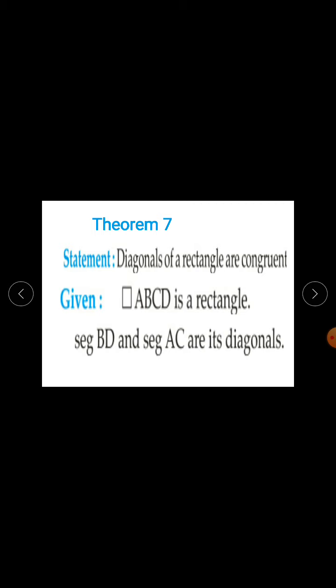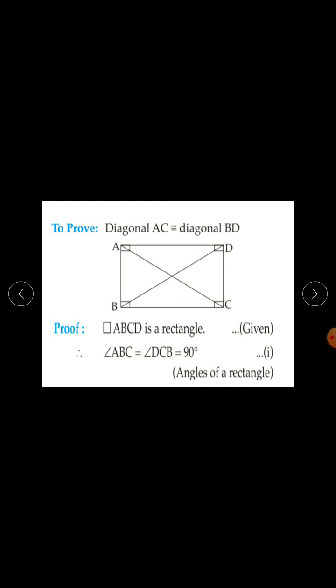Next theorem: Diagonals of a rectangle are congruent. What is given? Quadrilateral ABCD is a rectangle. Segment BD and segment AC are diagonals. To prove: diagonal AC is congruent to diagonal BD. Because the statement is diagonals of a rectangle are congruent, ABCD is a rectangle and you have to prove that diagonal AC is congruent to diagonal BD.